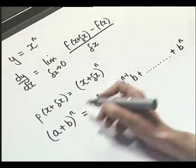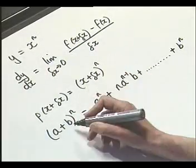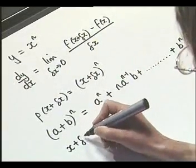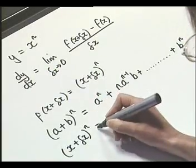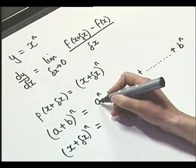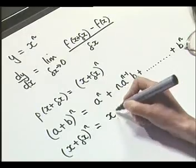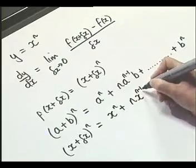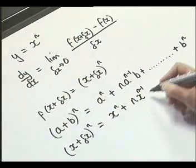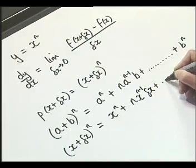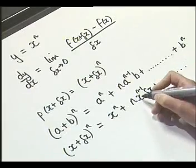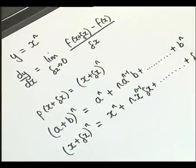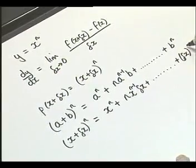Now let's look at what we've got. Instead of our a, we've got x, and instead of the b, we've got delta x. So we've got x plus delta x to the power n. So our a gives us x to the power n plus n x to the power n minus 1, and our b is delta x, plus all these terms which will be in terms of x and delta x, up to our last term, which is delta x to the power n.